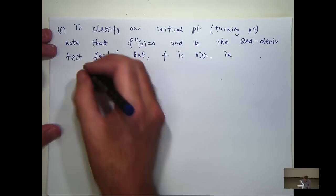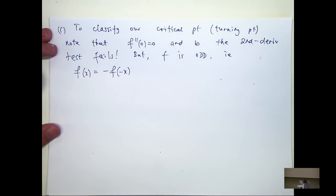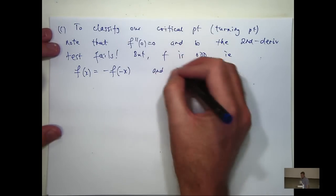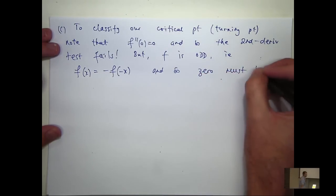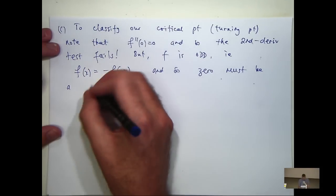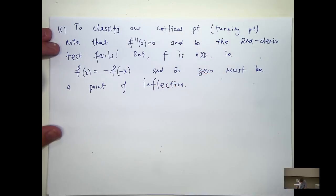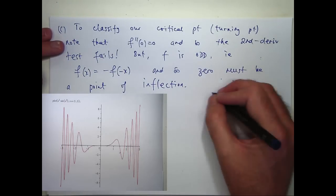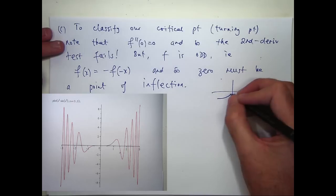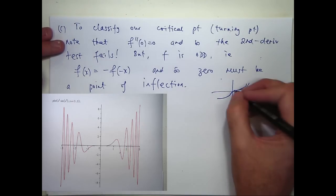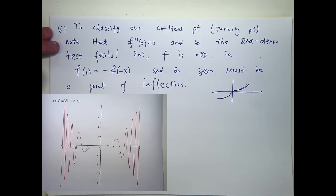So what do I mean by odd? I mean f of x equals minus f of minus x. When I say odd, the point here is that if you rotate the graph 180 degrees, you get the same graph. That's the basic idea.